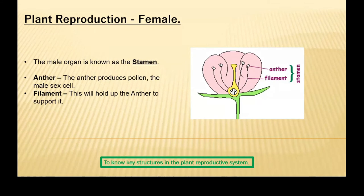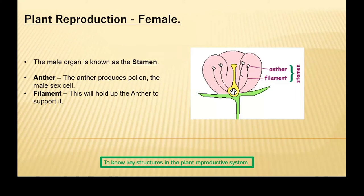The male reproductive organ, known as the stamen, is made up of two structures. The anther. Now, the anther produces the pollen, which is the male sex cell. Very similar to male and female human reproduction — you have your sperm and egg. Plants also have gametes, they're sex cells.